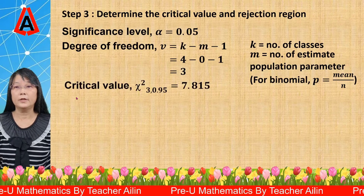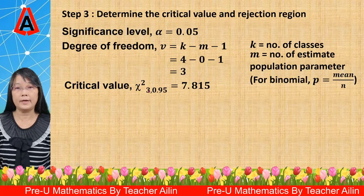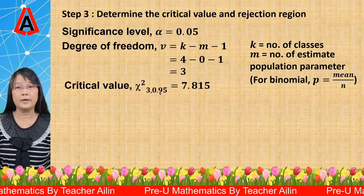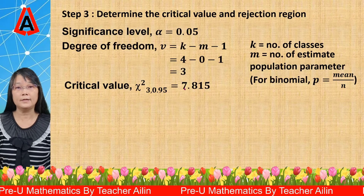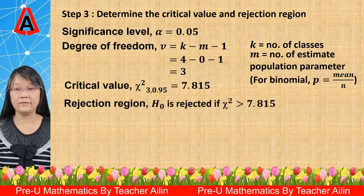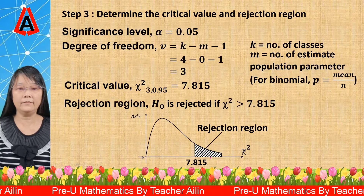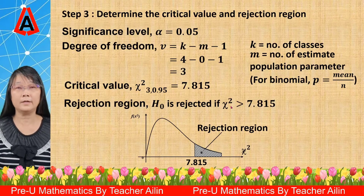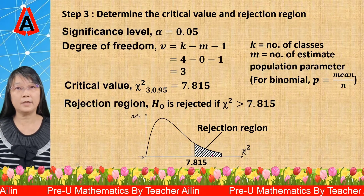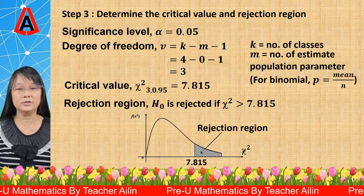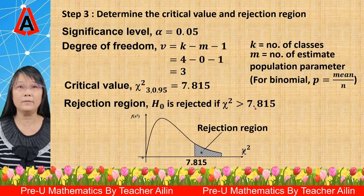The critical value can be found from the chi-squared table using degree of freedom 3 and significance level alpha = 0.05 (so 1 minus alpha = 0.95), giving a critical value of 7.815. For the rejection region, if our calculated chi-squared is greater than 7.815 — which is inside the rejection region — then we reject H₀. Therefore, the rejection region is: H₀ is rejected if chi-squared is greater than 7.815.